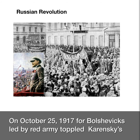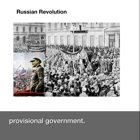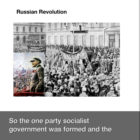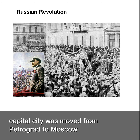On October 25, 1917, the Bolsheviks, led by the Red Army, toppled Kerensky's Provisional Government. A one-party socialist government was formed and the capital city was moved from Petrograd to Moscow.